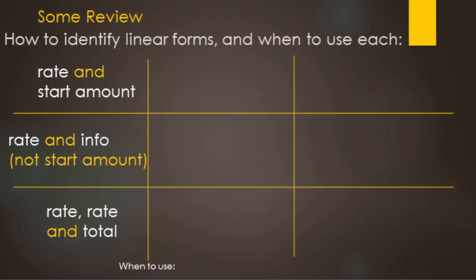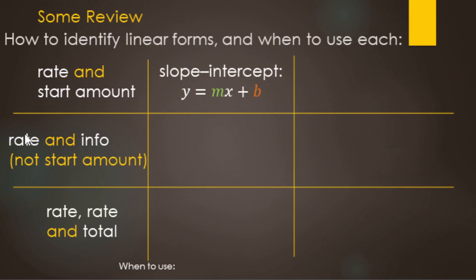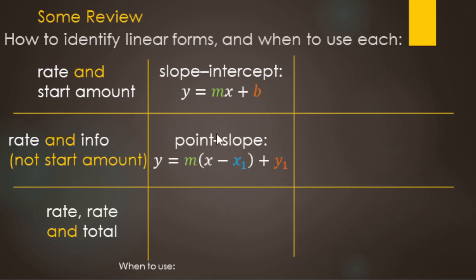Quick review: if you have information in a story problem with a rate and a start amount, you're going to use slope-intercept form. If you have a rate or slope and some other information but it's not the start amount or Y-intercept, that's going to be point-slope form. Now, if you have rate, rate, and a total, that's when you're going to use standard form.